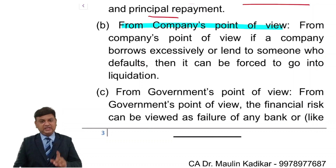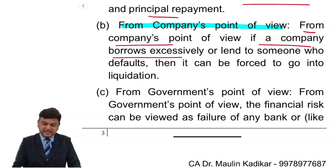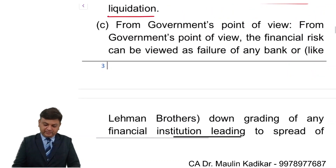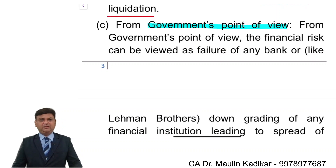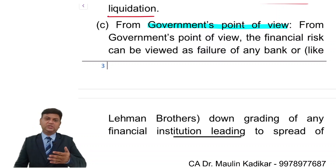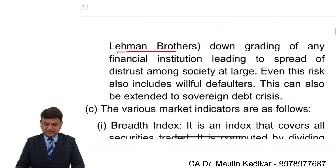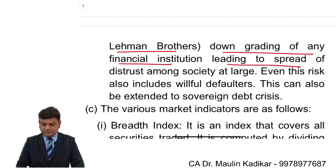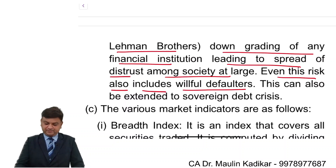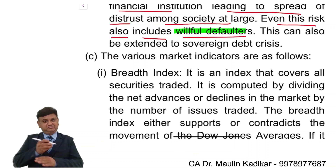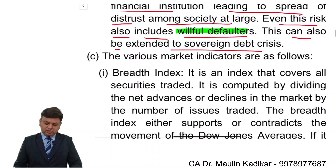From the company's point of view: if the company borrows excessively or lends to someone who defaults, it can be forced into liquidation. From the government's point of view: financial risk can be viewed as the failure of any bank — like Punjab Bank — or institutions like Lehman Brothers, leading to downgrading and a spread of distrust in society. This risk also includes willful defaulters such as Nirav Modi and Vijay Mallya, and can extend to sovereign debt crisis.